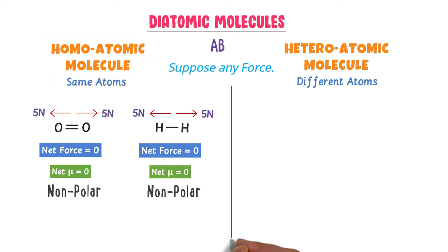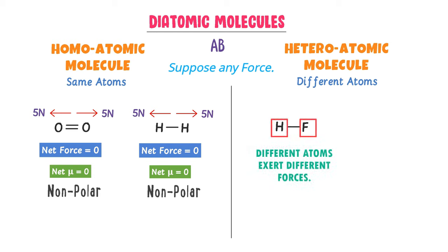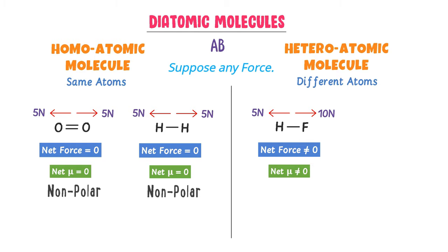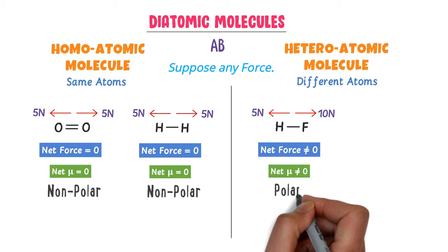On the other hand, consider hydrogen fluoride and its structure. Here, the atoms are different, so they exert different forces on the shared pair of electrons. Fluorine is more electronegative, so it exerts a 10N force in its direction, while hydrogen is less electronegative and exerts only a 5N force in the opposite direction. The net force is not equal to 0. Hence, the net dipole moment is also not 0, and it is a polar molecule.